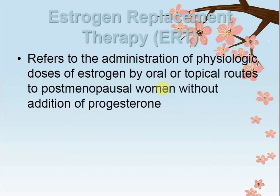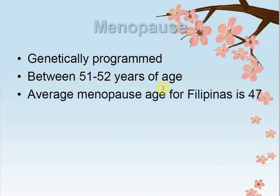Estrogen replacement therapy (ERT) refers to the administration of physiologic doses of estrogen by oral and topical routes to post-menopausal women without the addition of progesterone. According to the aging factor, medications containing estrogen are given orally or topically — not progesterone-dependent — to stimulate follicular cell processes.